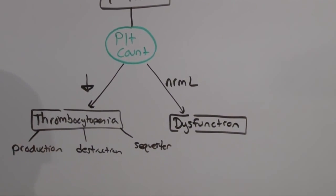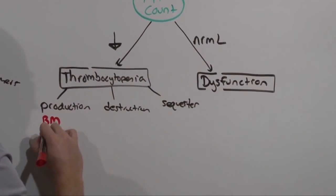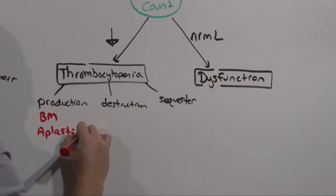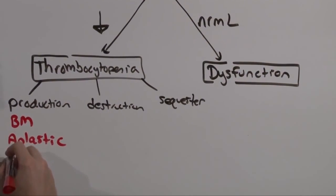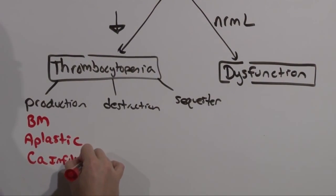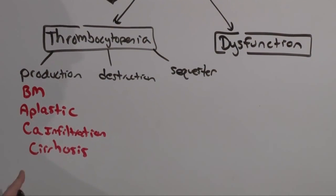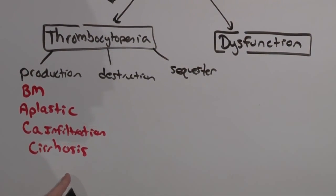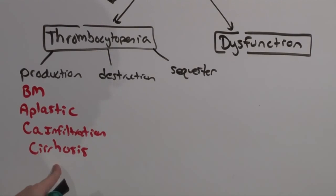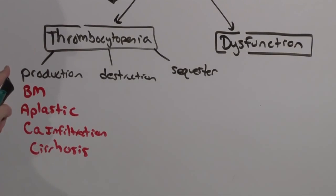Production issues of thrombocytopenia are going to be primarily bone marrow issues, such as aplastic anemia, or marrow infiltration from cancer. It can be cirrhosis. Since the liver is responsible for making TPO, like EPO for hemoglobin, coming from the kidneys, the liver makes TPO, which induces bone marrow expression of platelets. So these are the major conditions you should think of when you see a thrombocytopenia and you're thinking production.